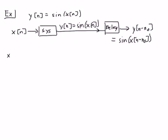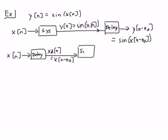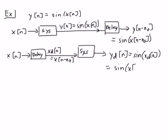Now we compare that to what would happen if we take the input and delay it first. That gives us xd(n) = x(n - n0). We put that through the system and what comes out is the sine of what went in — the sine of xd(n), which is yd(n). Substituting in for xd(n), we get yd(n) = sin(x(n - n0)).